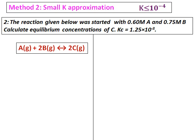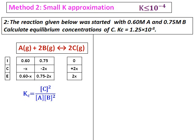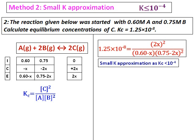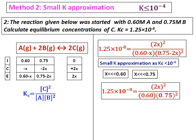Set up the ICE table. Substituting values gives 1.25 times 10 to the power of negative 8, equal to 2x squared divided by (0.60 minus x)(0.75 minus 2x). Since K is 10 to the power of negative 8, the reaction will hardly proceed toward products, meaning x is very small. Therefore, we can approximate: 0.60 minus x is approximately 0.60, and 0.75 minus 2x is approximately 0.75. This simplifies the equation considerably.